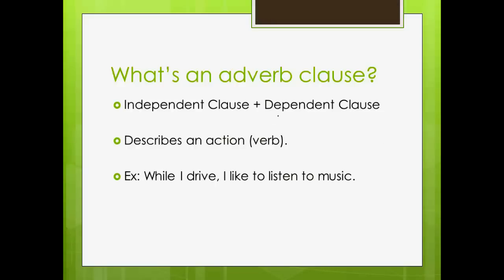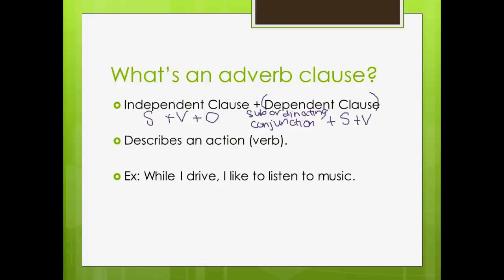So what is an adverb clause? We have two things that are very necessary in order to create a complex sentence. The first thing I need is that independent clause — a subject, a verb, and sometimes an object. In my dependent clause, the adverb clause falls under this category because what an adverb clause does is it has what we call a subordinating conjunction that connects the two clauses together and gives meaning to the two verbs and their relationship between each other.